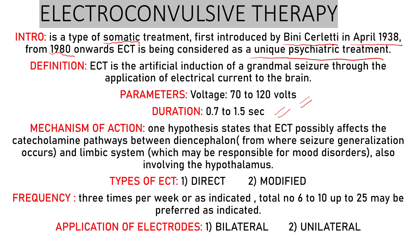The mechanism of action — how ECT works — is that ECT possibly affects the catecholamine pathway. Catecholamines are neurotransmitters, specifically epinephrine and norepinephrine, which are responsible for your fight-or-flight response. ECT affects the catecholamine pathway between the diencephalon, where seizure generalization occurs, and the limbic system, which is responsible for mood. The hypothalamus is also affected.